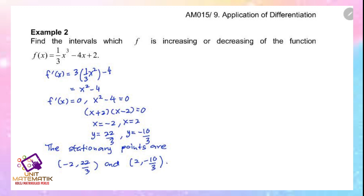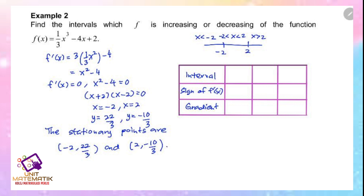To determine the nature of each point and find increasing/decreasing intervals, form a table. With critical values x equals negative 2 and x equals 2, there are three intervals: less than negative 2, between negative 2 and 2, and greater than 2. Choose suitable test values: negative 3 for the first interval, 0 for the second, and 3 for the third.